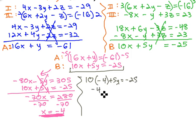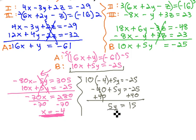10 times negative 4 is negative 40 plus 5y is negative 25. So if we add 40 to both sides, we get 5y equals 15, and then we can divide both sides by 5, and we now have our y value of 3.